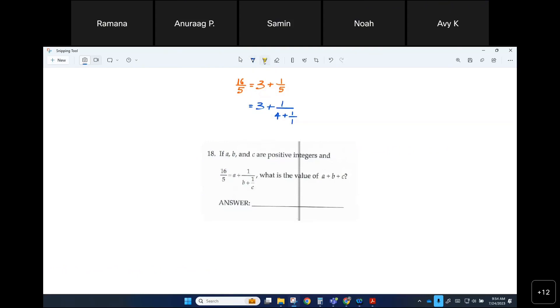So now what is your a, and what is your b, and what is your c? So 3, 4, and 1, and he is asking the sum of all of those: 3 plus 4 plus 1 is 8. Is that making sense to everyone?